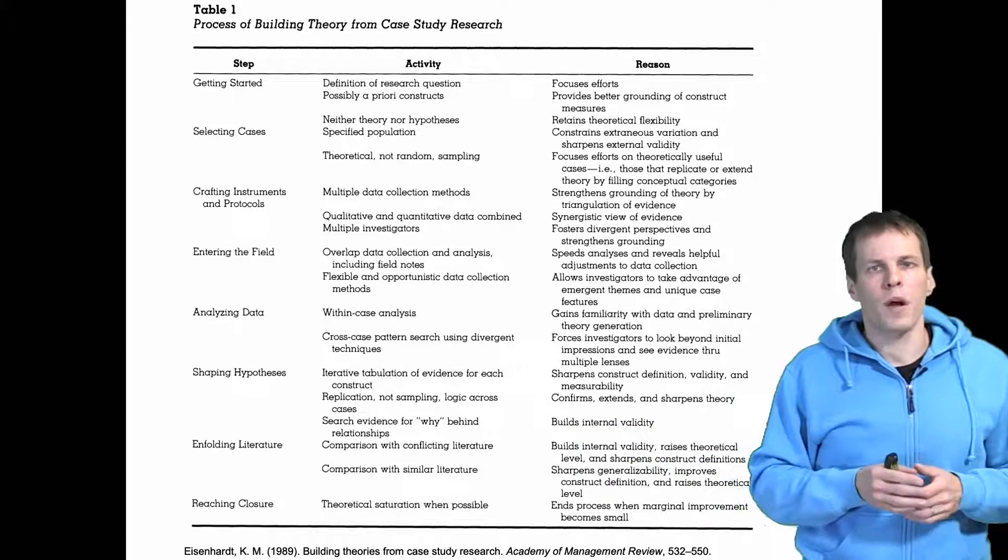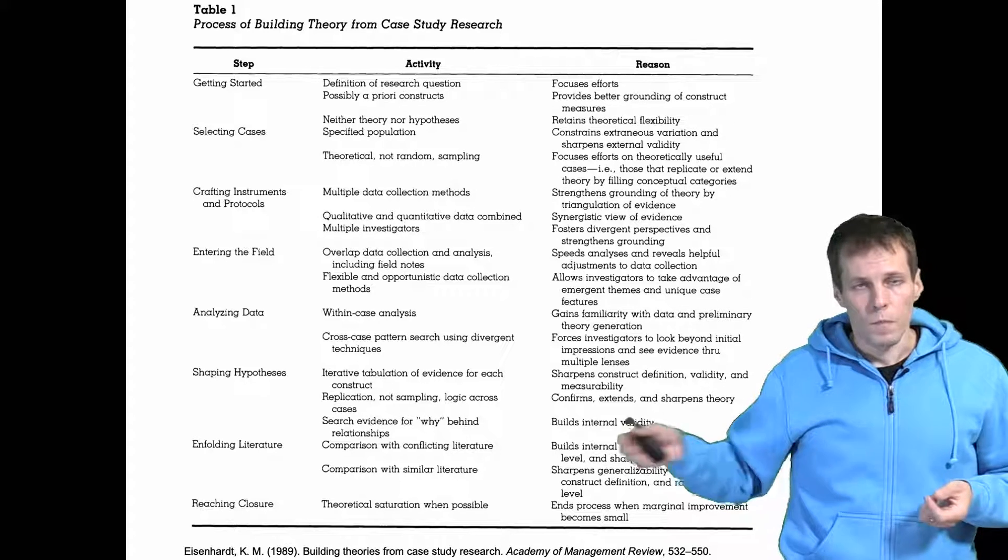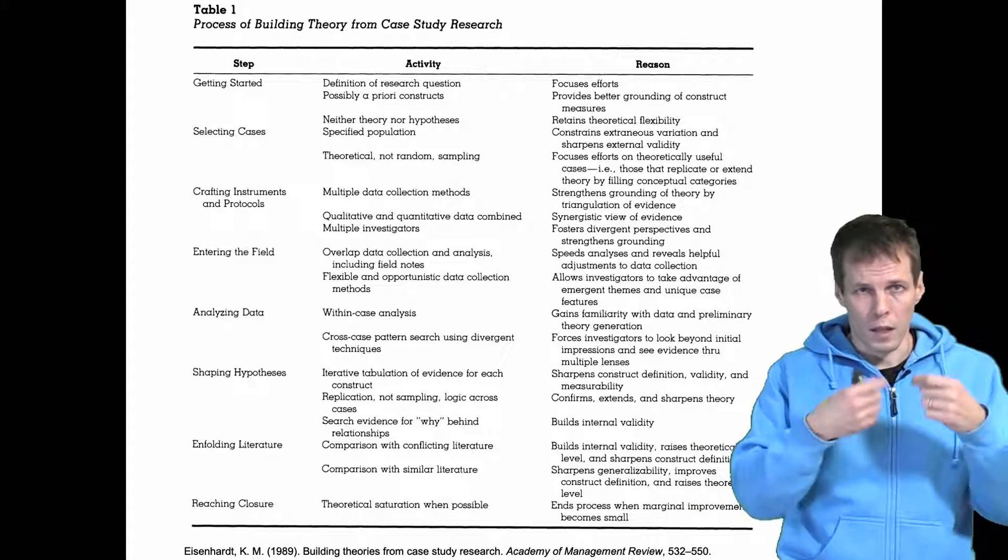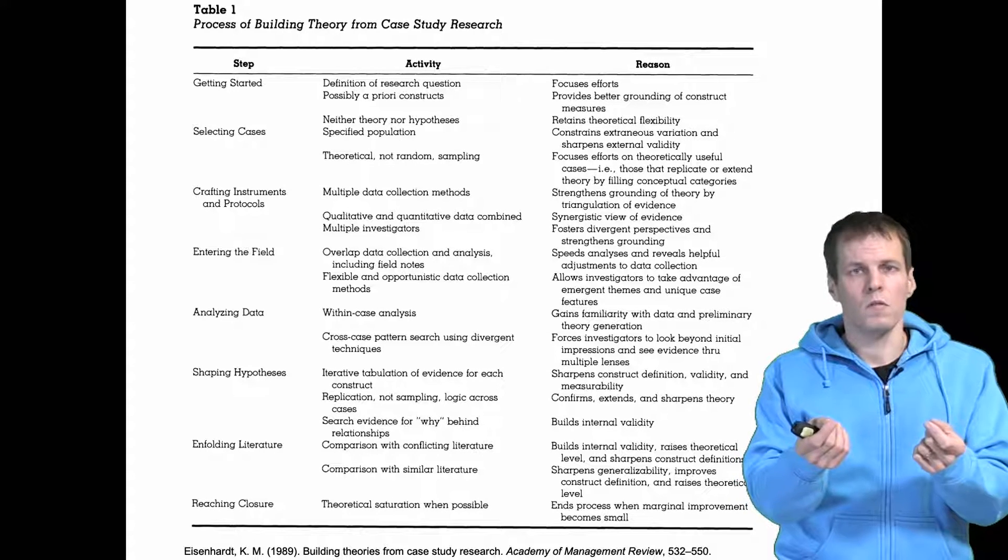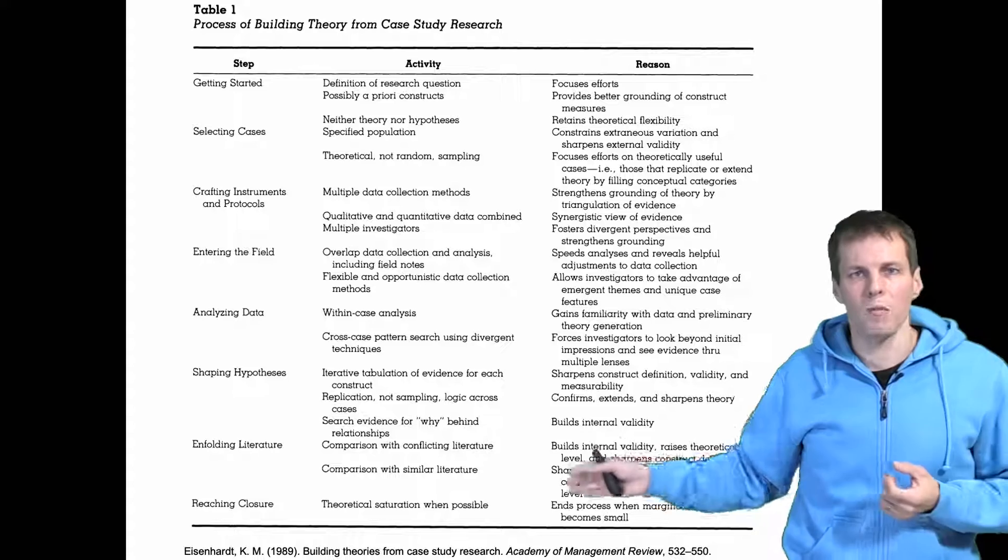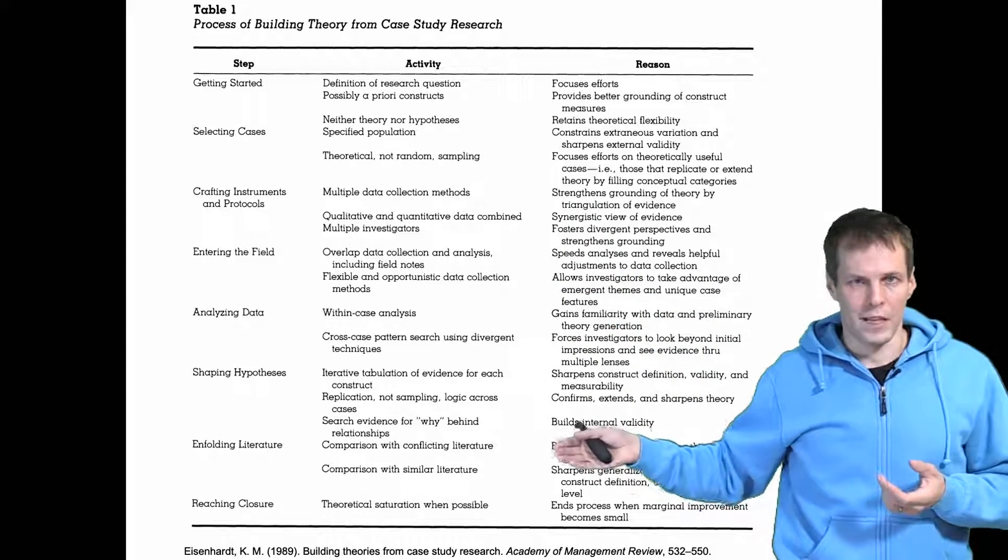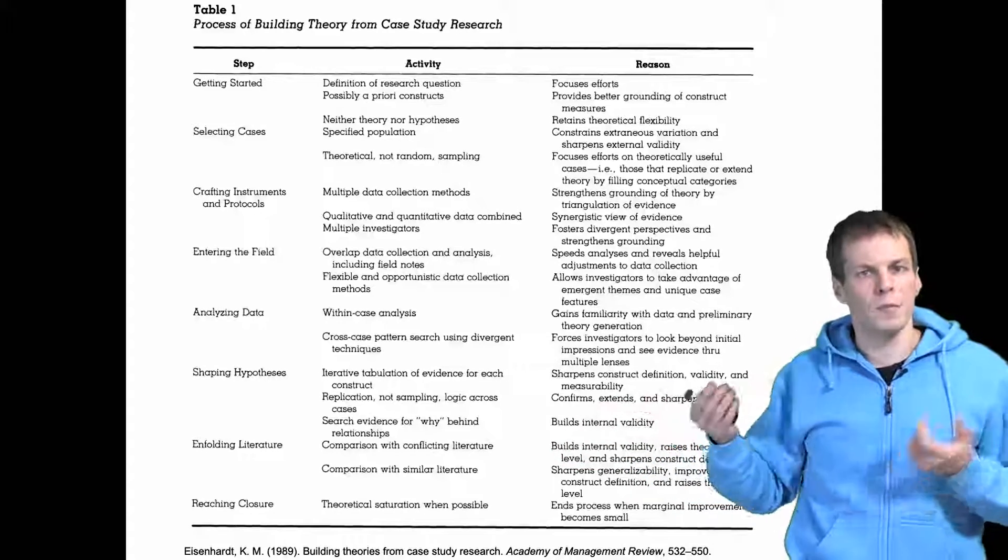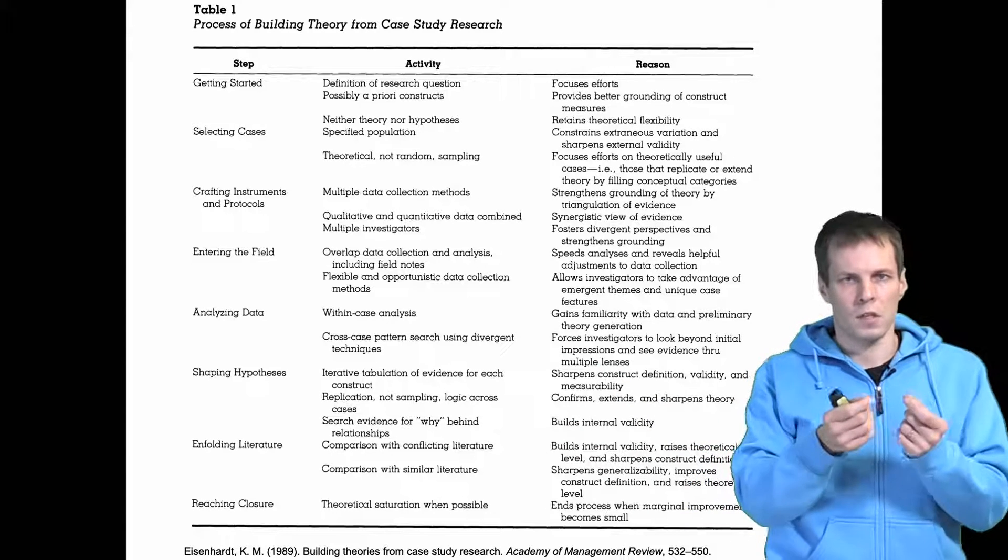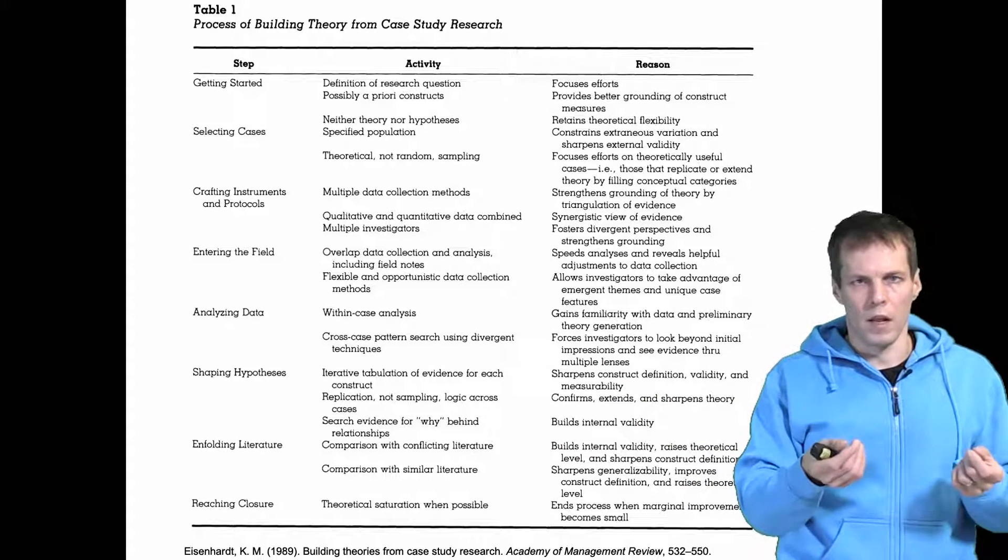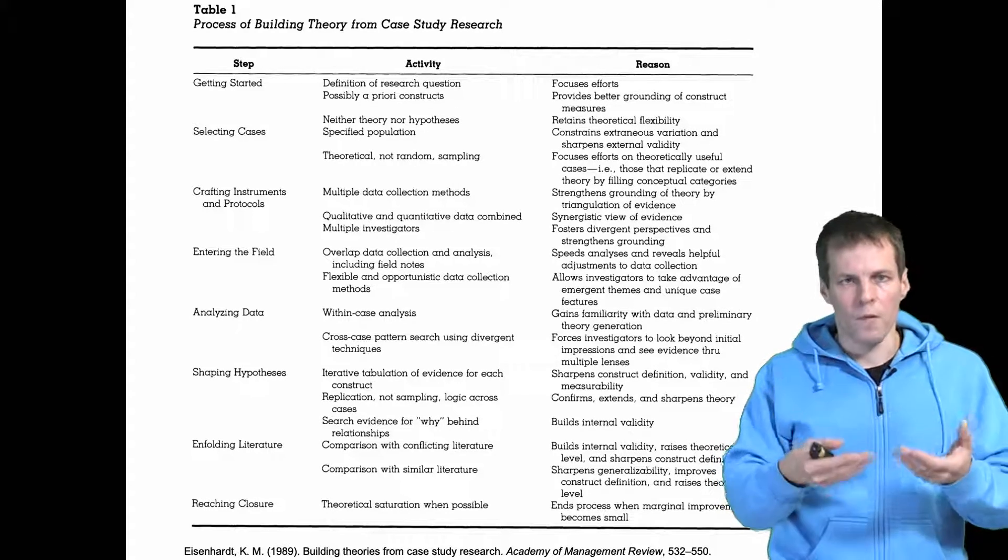And then finally you compare against prior literature because this is typically done to come up with a theory between known concepts. So it's not very common to apply this kind of multiple case study and develop new concepts using multiple case study. So grounded theory is perhaps better for developing new concepts. This is more about finding associations and finding causal relationships between concepts that you choose before you collect the data.